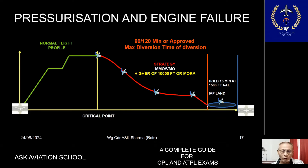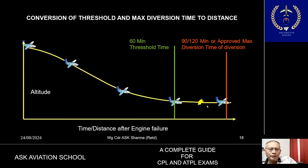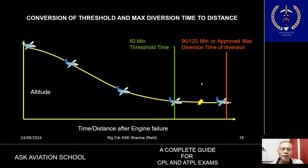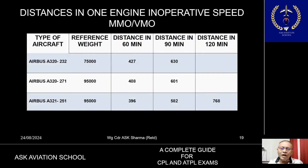The time of 60, 90, or 120 minutes — or any other time specified by the operator to the regulator — needs to be converted into distance using the planned speed, in order to plan the particular route. Examples of these distances, which can be travelled in 60, 90, or 120 minutes, are given for different types of aircraft.